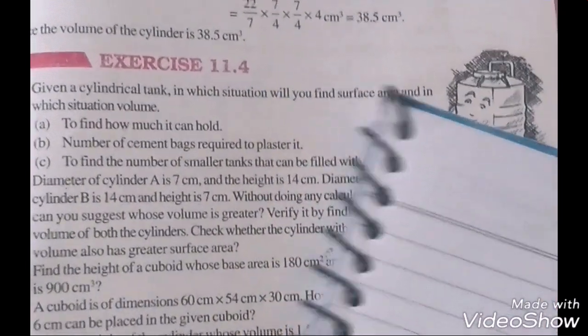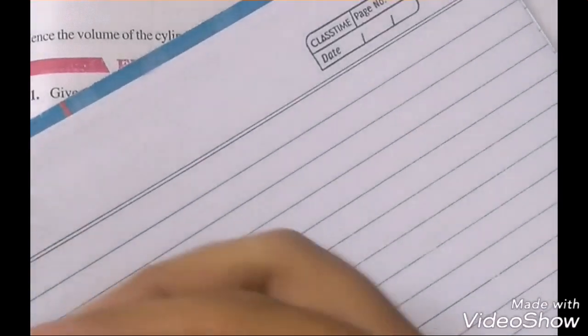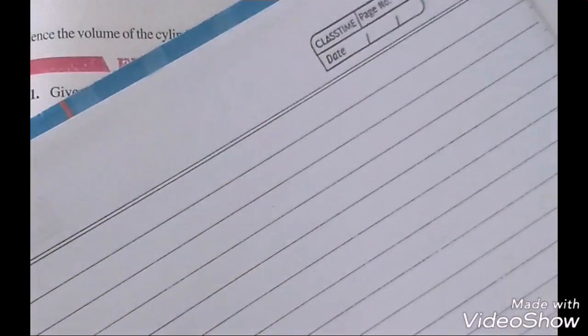What is the general formula for volume? L into B into H. Cuboid. Cuboid is okay. The formula is okay.